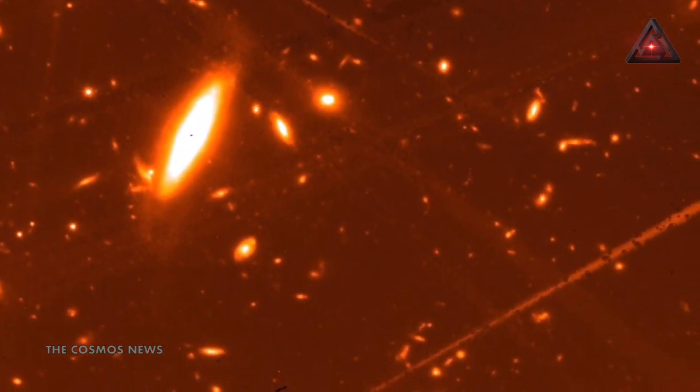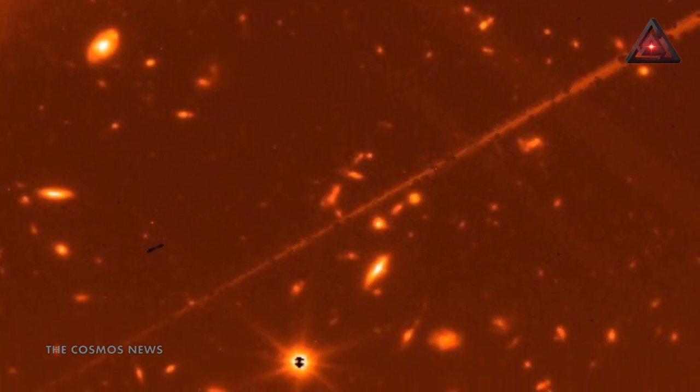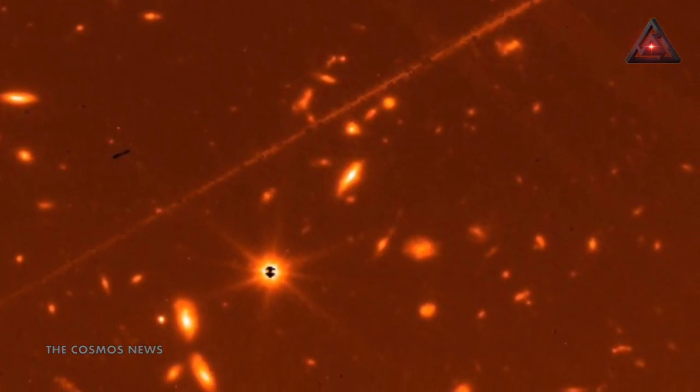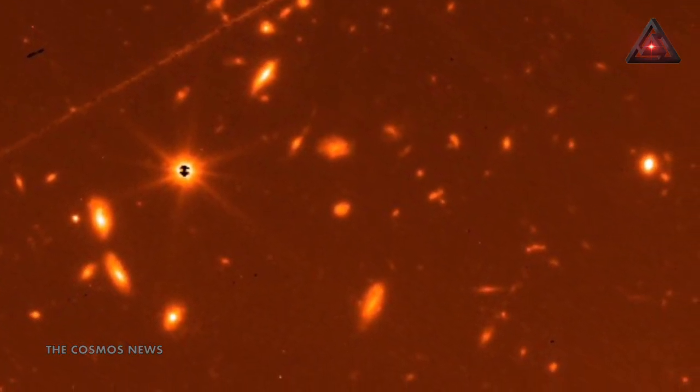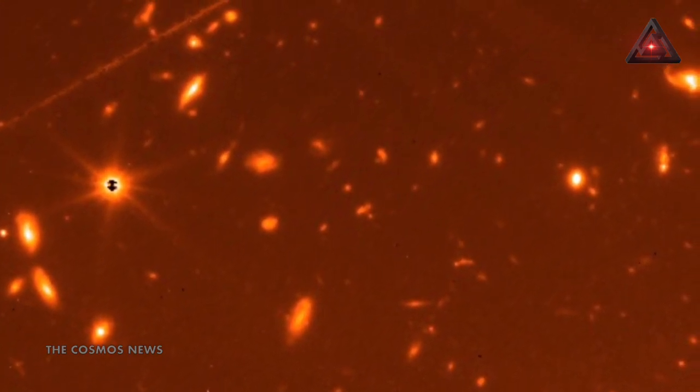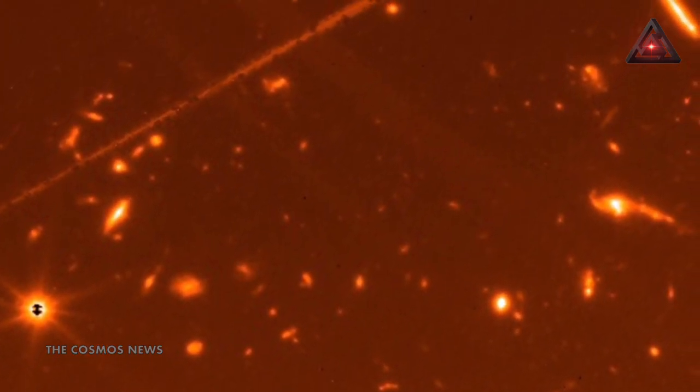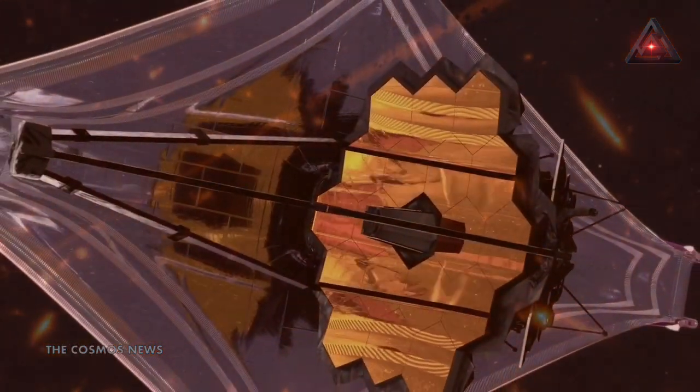When this image was taken, astronomers were thrilled to clearly see all the detailed structure in these faint galaxies. The faintest blobs in this image are exactly the types of faint galaxies that Webb will study in its first year of science operations.